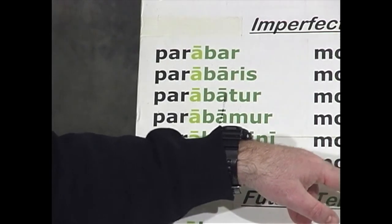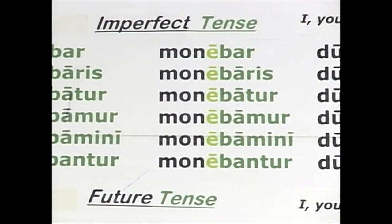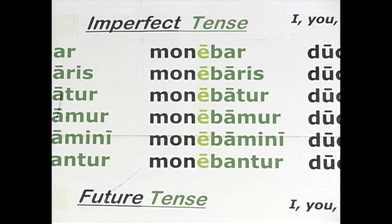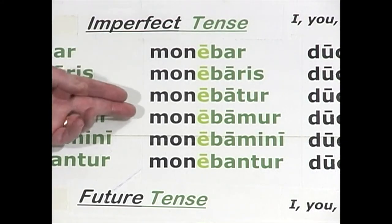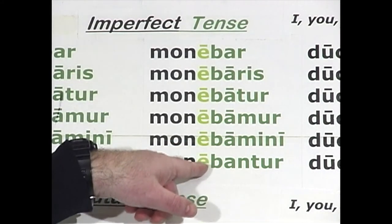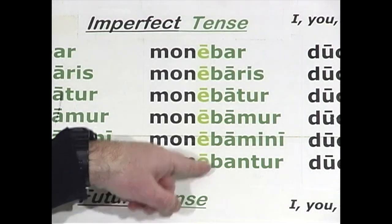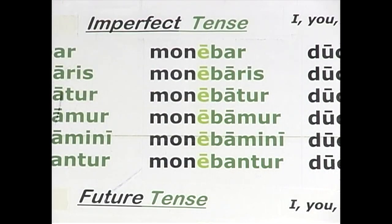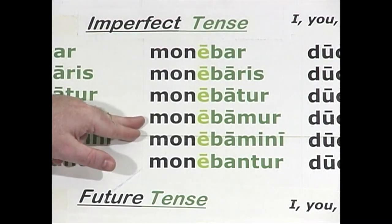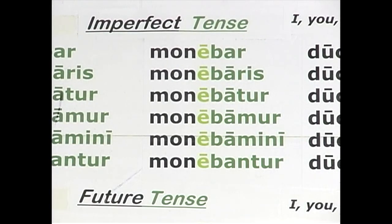The imperfect passive indicative of moneo is formed the same way. You add -bar, -baris, -batur, -bamur, -bamini, -bantur to the stem of the verb, mone-. So: monebar, monebaris, monebatur, monebamur, monebamini, monebantur. The -e length is long from that stem. Translation: I was being warned, you were being warned, he was being warned, we, you plural, they were being warned.